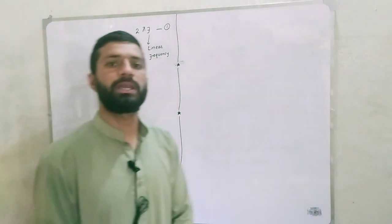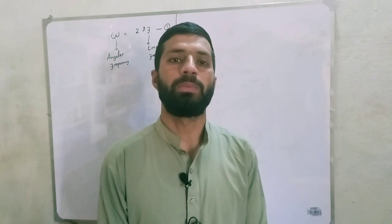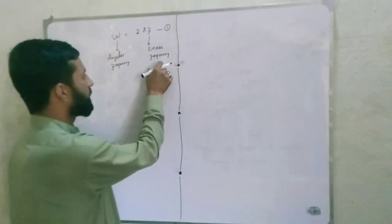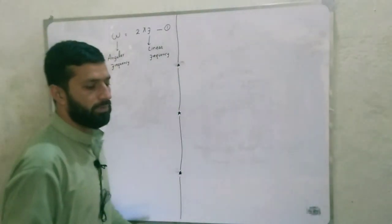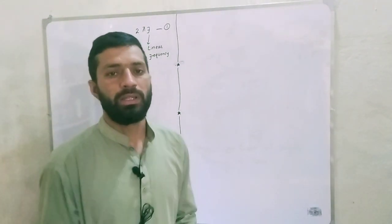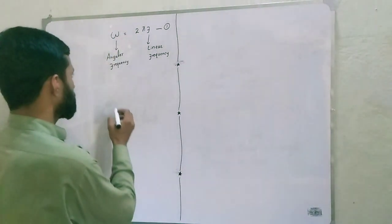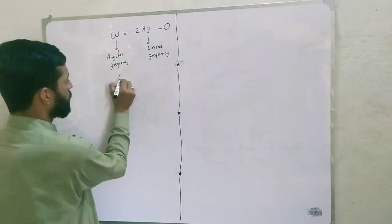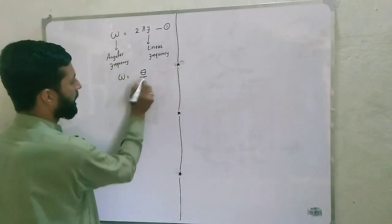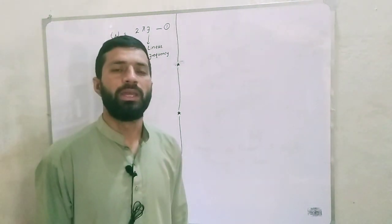Frequency is defined as the number of vibrations per unit time. If that vibration occurs in a periodic linear motion, it is called linear frequency. If that vibration occurs in circular or angular motion, we call it angular frequency. Angular frequency: omega is equal to theta divided by t.